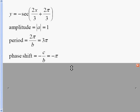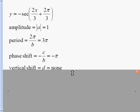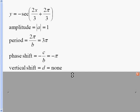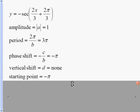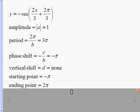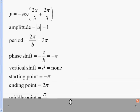Our phase shift is negative c, so opposite of this inside number, divided by b. And that's how we get our negative π. There is no vertical shift for this problem. And then we're going to get our starting, middle, and ending points. Our starting point is going to be our phase shift. We add to that the period to get our ending point. And then we add these two numbers together, divide by 2, and we get our middle point.